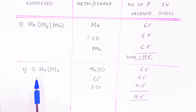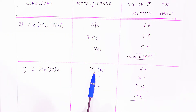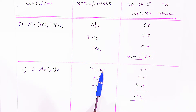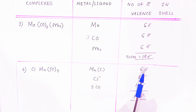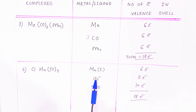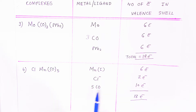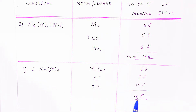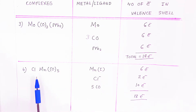In the fourth example, the metal is Mn1+, which has 6 electrons in its valence shell. Chloride provides 2 electrons, and 5 carbonyl ligands provide 10 electrons. When you add these electrons — 6 + 2 + 10 — the total is 18 electrons. This is the stable electronic configuration, and therefore this complex is stable.